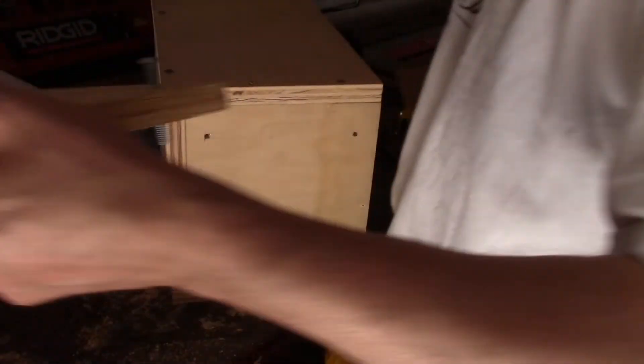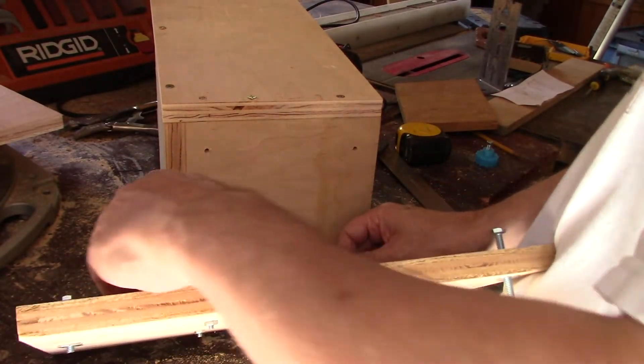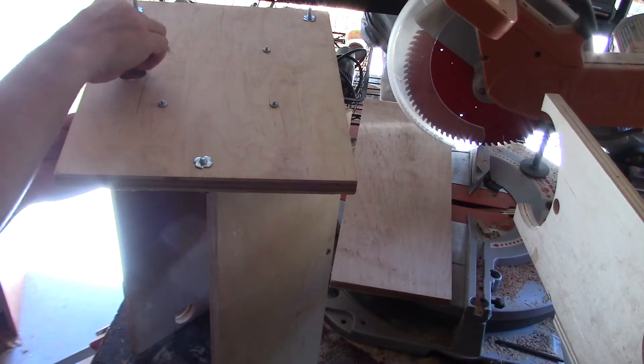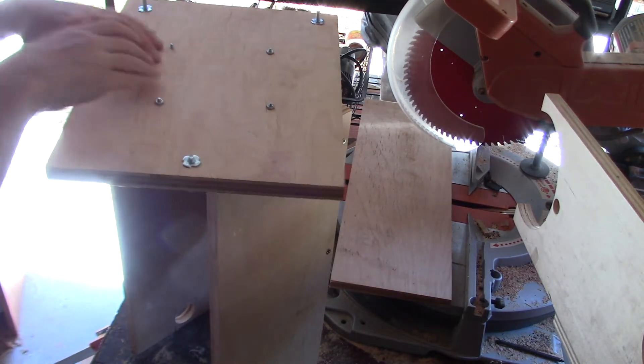And now it's very simple to attach the Lazy Susan to the bottom of the telescope mounting box. Here is where that access hole comes in handy because now you can put each bolt in without taking anything apart.